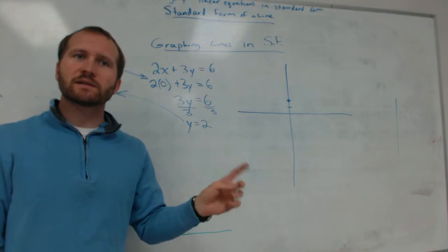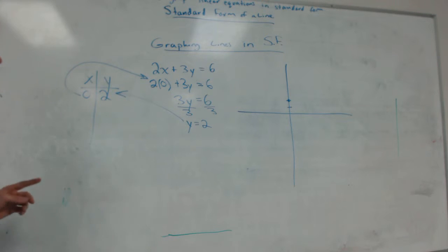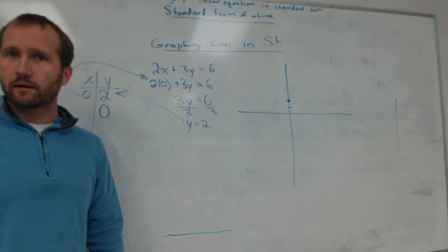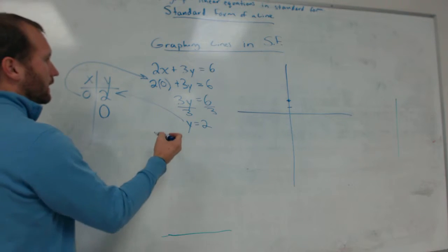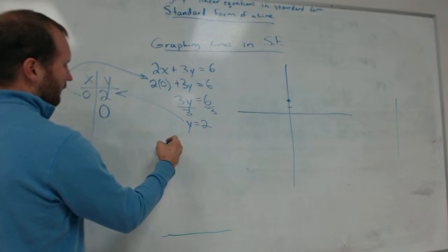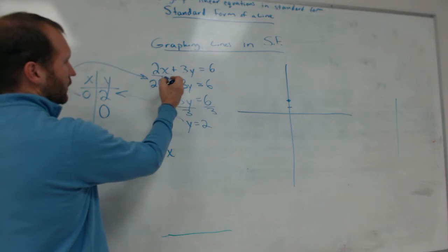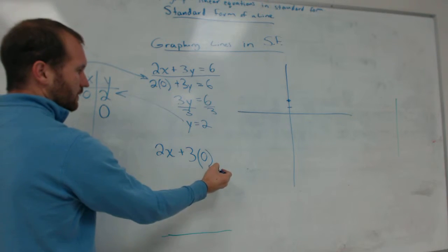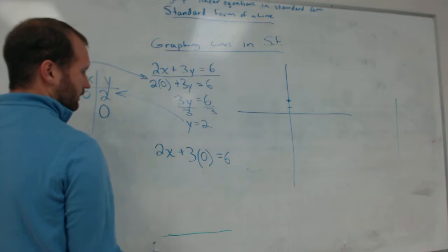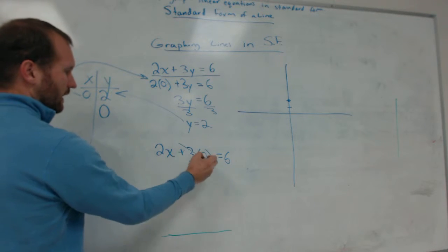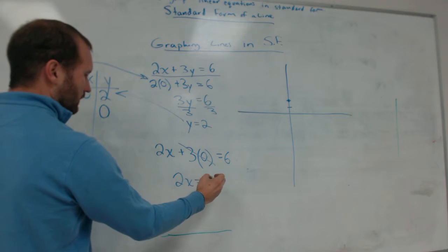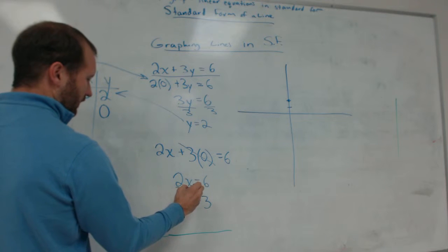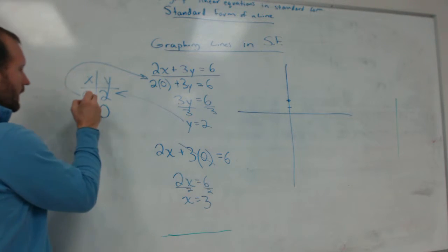So this is the key. With standard form, to find your second point, pick 0 for Y. Pick 0 for Y. And then plug that in. So now I have 2X. I'm looking right here. Plus 3, what is Y? 0. Times 0 equals 6. Now I can simplify this. 3 times 0 is just 0. So I have 2X equals 6, or X equals 3. So I divide both sides by 2. So then X is 3.